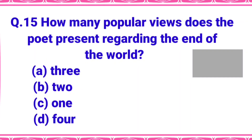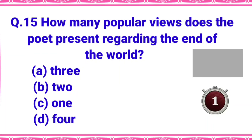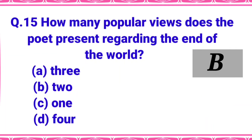How many popular views does the poet present regarding the end of the world? Option A: 3, B: 2, C: 1, or D: 4. Your time starts now. The right answer is option B - 2. The poet presents two views: one, that the world will end by ice, and two, that it will end by fire.